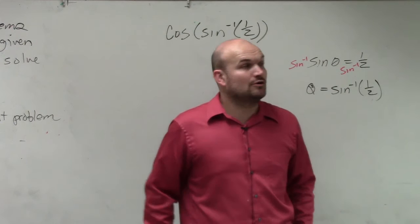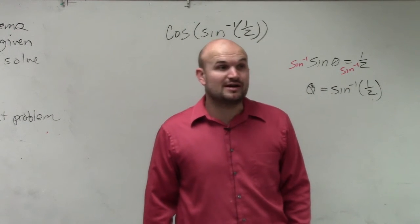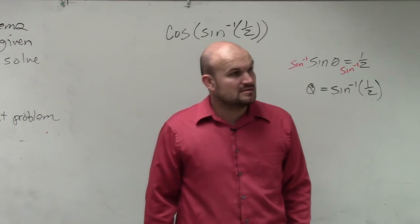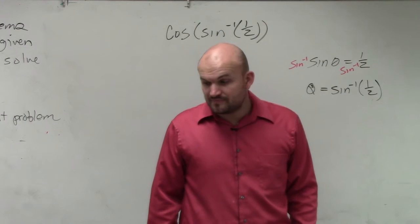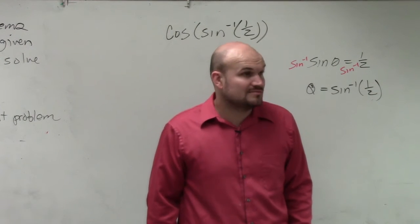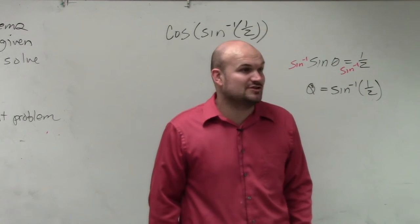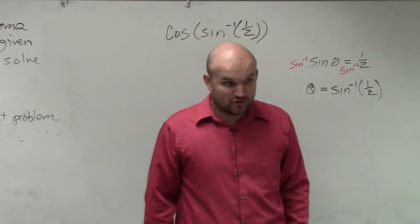Do you guys see where the Y coordinate is 1 half? There's only one triangle that produces that. The green triangle. So therefore, the angle of that green triangle is 30.